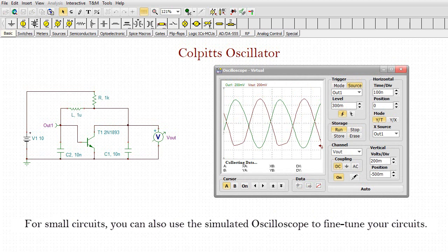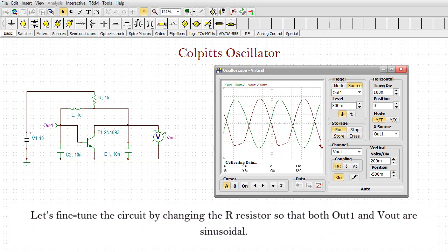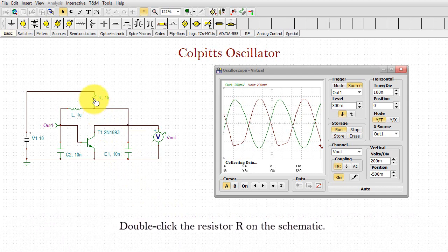For small circuits, you can also use the simulated oscilloscope to fine-tune your circuits. For example, you must have observed that in our oscillator, while the OUT1 signal is sinusoidal, the VOUT signal is quite distorted. Let's fine-tune the circuit by changing the R resistor so that both OUT1 and VOUT are sinusoidal. Double-click the resistor R on the schematic.